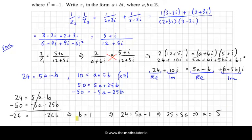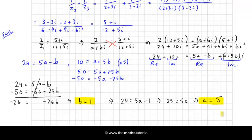So we have the value of the two coefficients a and b, which means I can write z₁ finally as a plus bi. So that's 5 plus 1i, and there's my answer.